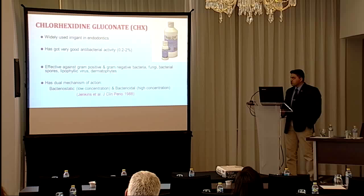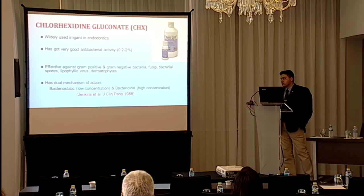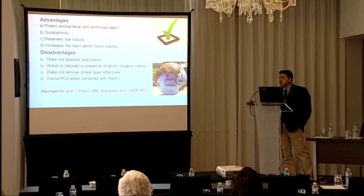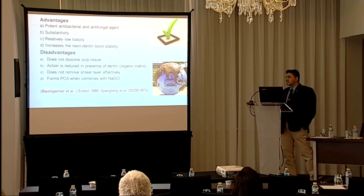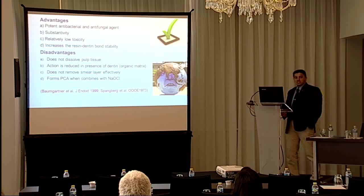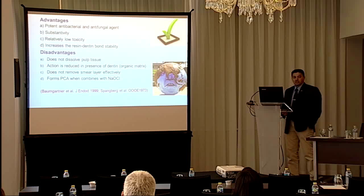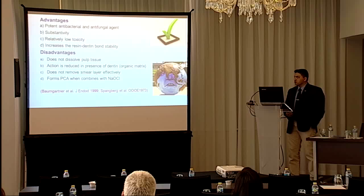Chlorhexidine is another commonly used root canal irrigant. It has very good bactericidal action, is effective against gram-positive and gram-negative bacteria, fungi, viruses, and dermatophytes. It has a dual mechanism of action: bacteriostatic at lower concentration and bactericidal at higher concentration. Advantages include good antibacterial and antifungal properties, substantivity allowing prolonged release inside the root canal, comparatively low tissue toxicity, and increased resin-dentin bond stability. Disadvantages include low pulp tissue dissolving ability, reduced action in the presence of organic matrix, poor smear layer removal, and formation of parachloroaniline when combined with sodium hypochlorite.